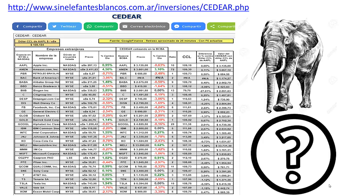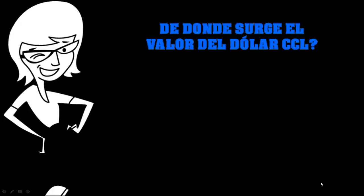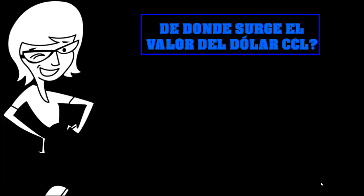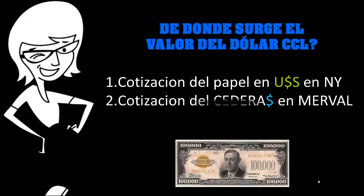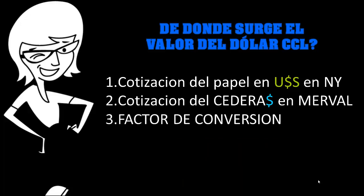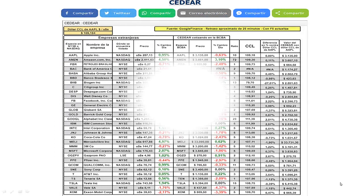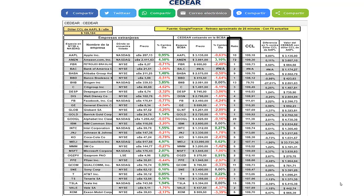¿Por qué sucede esto? Lo primero que te tiene que quedar claro es de dónde surge el valor del dólar contado con liquidación de cada firma, y hay tres factores que intervienen. El primero: la cotización del papel en dólares en la plaza extranjera. El segundo: la cotización del CDR en pesos en el mercado de valores. Y el tercero: el factor de conversión entre los puntos 1 y 2. El factor de conversión figura como ratio en esta columna, y el mismo solo es un número.